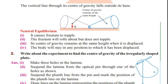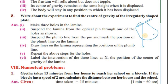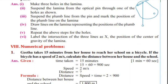Write about the experiment to find the center of gravity of an irregular shaped plate. Make three holes in the lamina. Suspend the lamina from an optical pin through one of the holes. Suspend a plumb line from the pin and mark its position on the lamina. Draw lines on the lamina representing the position of the plumb line. Repeat the above steps for the other holes. Label the intersection of the three lines as X — that is the center of gravity of the lamina.